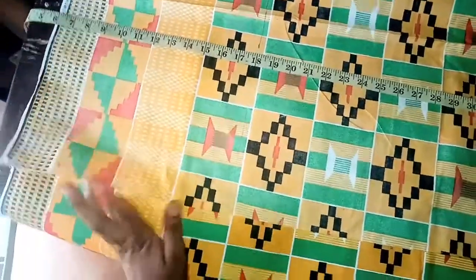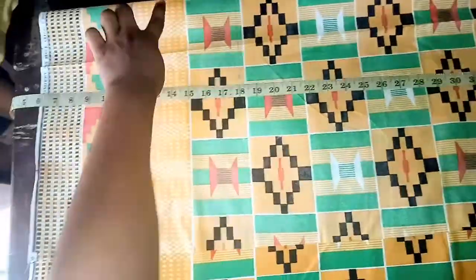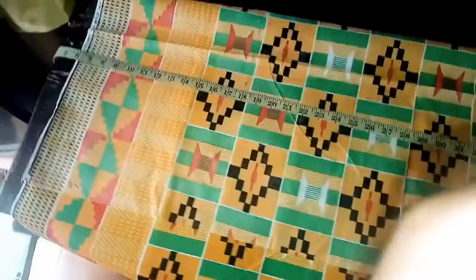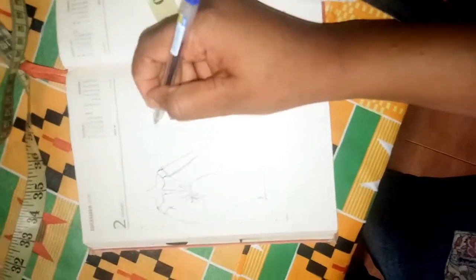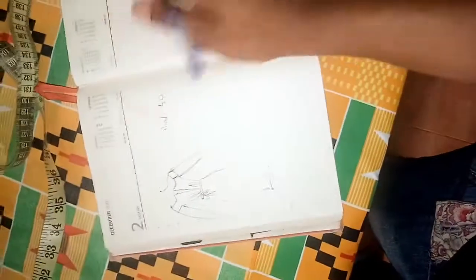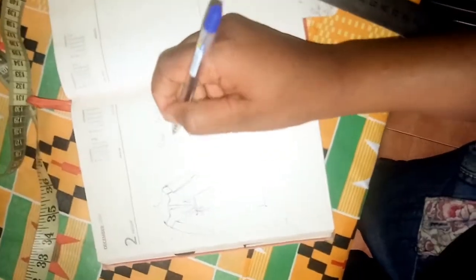The next thing will be to check the highest measurement so that we don't waste our material. For this folding, I'm going to check what is going to be proper, and how would I calculate that? I'm going to be calculating my bust. My bust is 40 divided by 4 equals to 10.